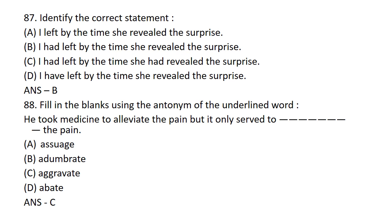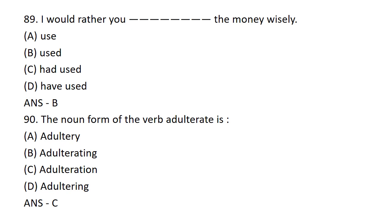Fill in the blanks using the antonym of the underlined word: I would rather you dash the money wisely. Option A: USE. Option B: USED. Option C: HARD USED. Option D: HAVE USED. Option B is the correct answer — USED. I would rather you USED the money wisely.